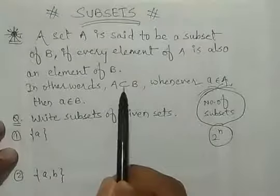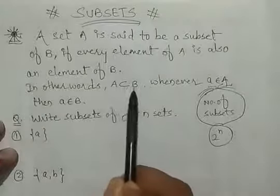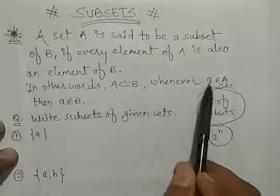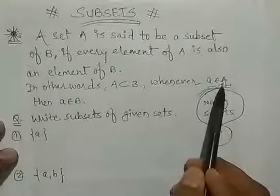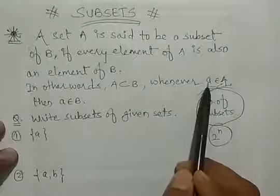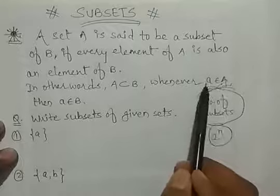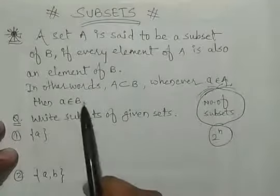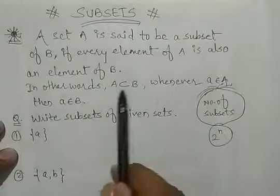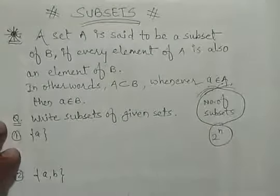A is a subset of B — this is the symbol/sign of subset. So A is a subset of B whenever small 'a' belongs to A. यहाँ capital A एक set है और small a एक element है. तो कोई एक element है जो A set को भी belong कर रहा है, और वो ही element B set को भी belong कर रहा है, तो it means वो A जो होगा, वो B का एक subset होगा.